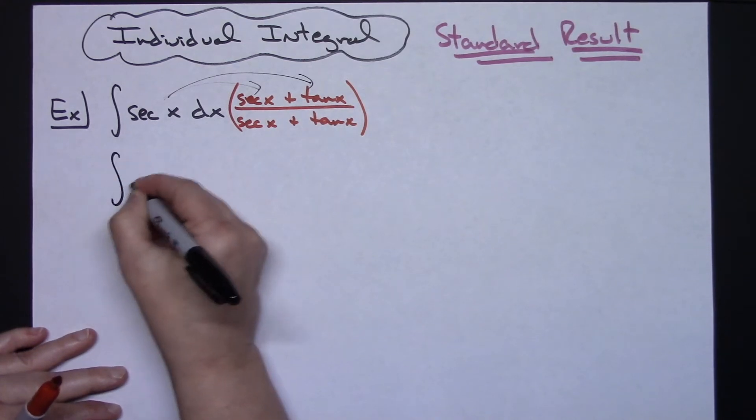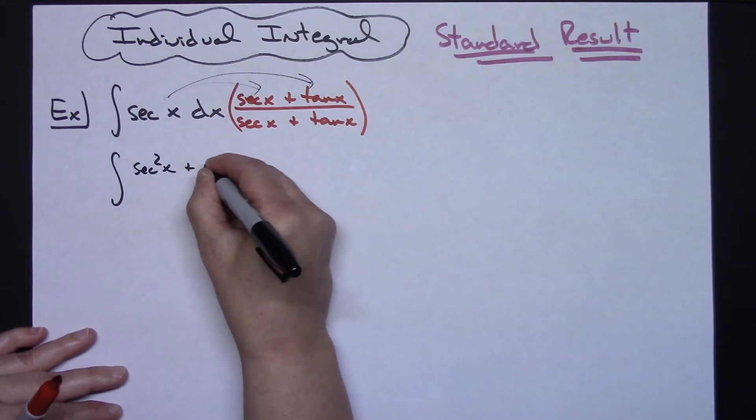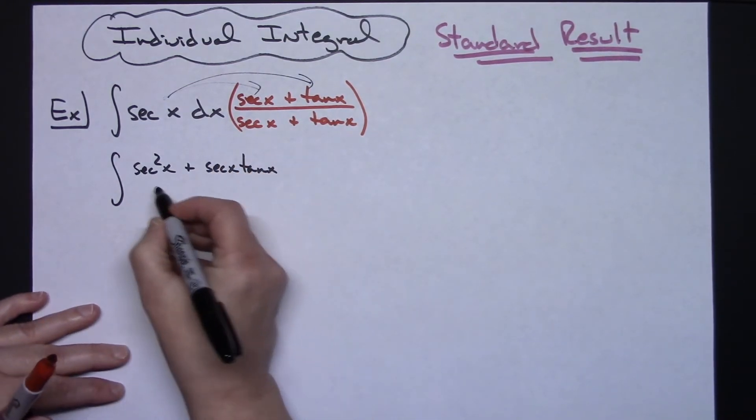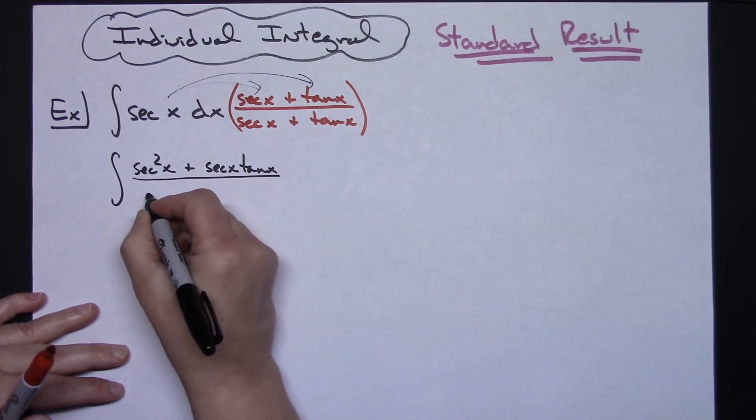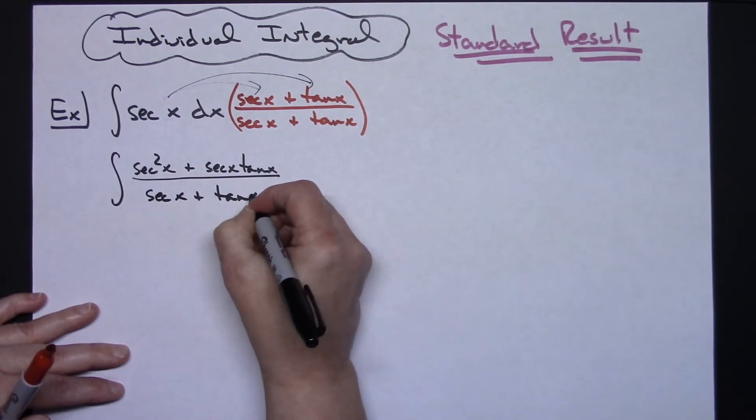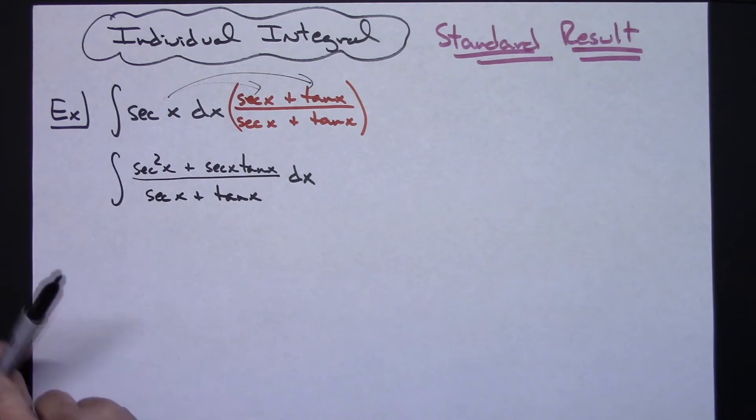So then this becomes the integral of secant squared x plus secant x tangent x. And then on the bottom there I will just have the secant x plus tangent x and then dx. And then hopefully at this point you can see really easily how this is going to work for a u substitution.